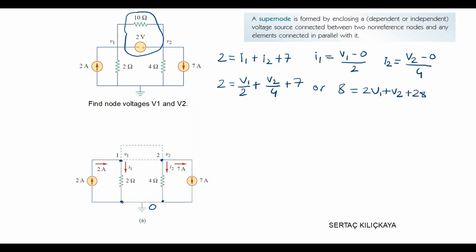It is also equivalent to V2 equals minus 20 minus 2V1. This is our first equation.